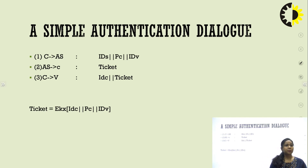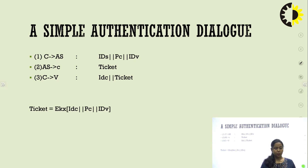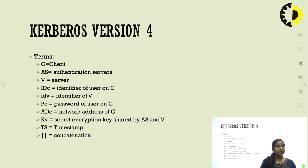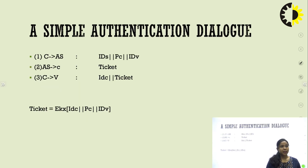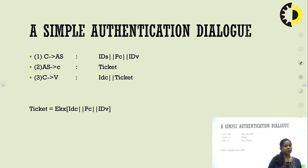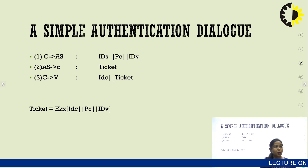In the simple authentication dialogue, the client connects to the authentication server with IDC, PC, and IDV — the identification of the user on the client side, the identifier on V, and the password on the client side. The client reaches the authentication server, which responds back. A ticket is created, generated, and given to the client along with the IDC. The ticket is indicated by the key E(KV), which is a concatenation of IDC, PC, and IDV.